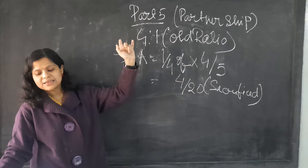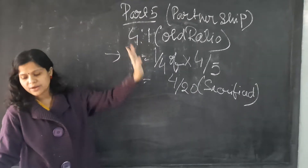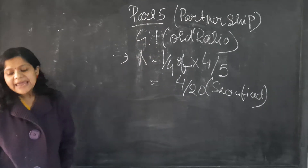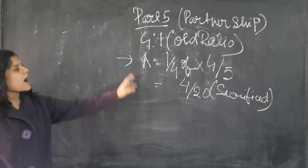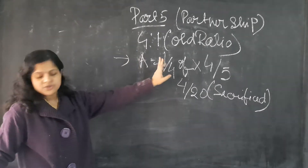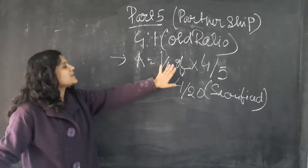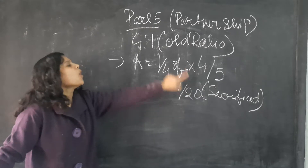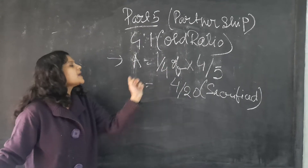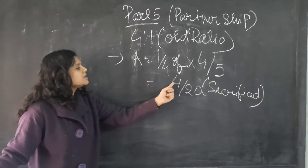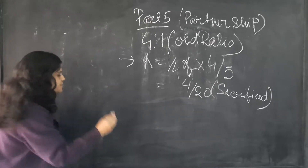A and B are partners sharing profit in the ratio of 4 is to 1. A surrenders 1/4 of his share. What is A's share? 4 by 5. So 1/4 of that — then how much does A surrender? 4 by 20.